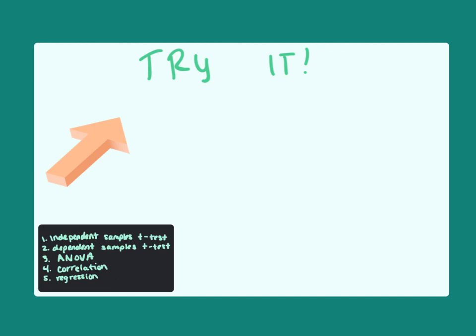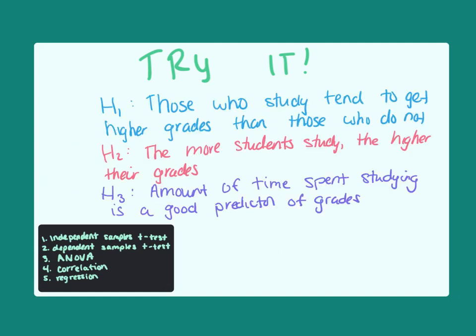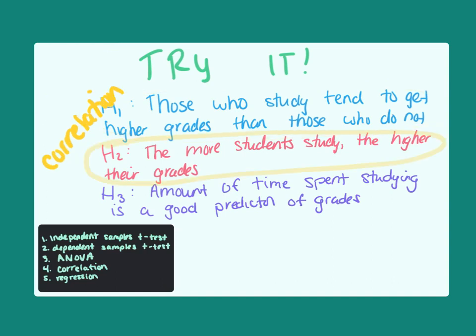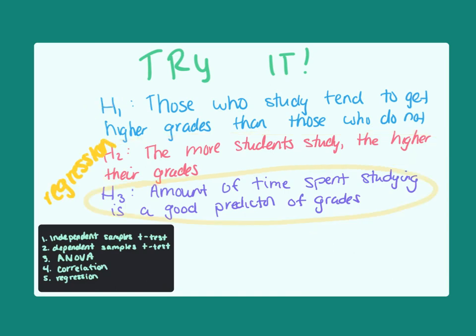Now let's try some practice hypotheses. The first: those who study tend to get higher grades than those who do not. We have two distinct groups compared on something quantitative — their grades — so we use an independent samples t-test. The second: the more students study, the higher their grades will be. This requires a bivariate correlation because we expect a straight-line relationship. The third: the amount of time spent studying would be a good predictor of grades — if something is a predictor, use regression.